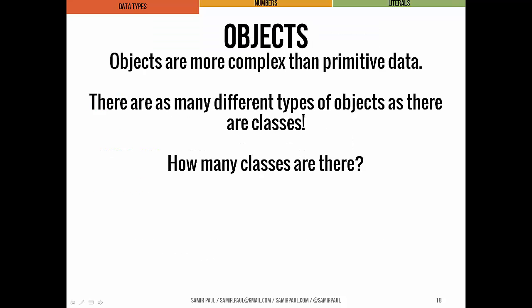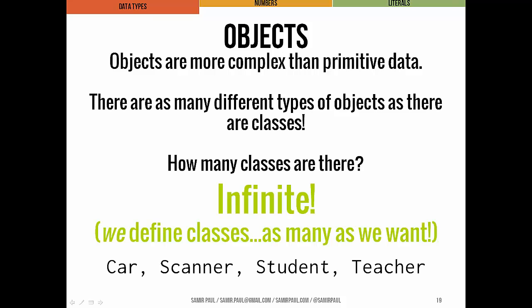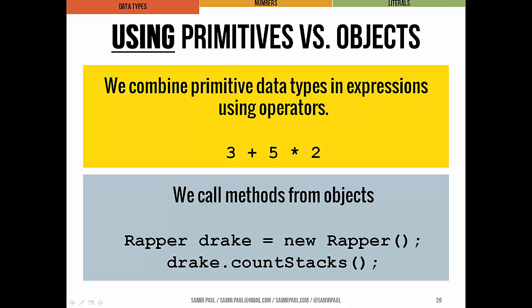Objects are a little more complex. There are as many different types of objects as there are classes defined, and there are infinite classes because we define them — so there's a car, a scanner, a student, a teacher, and we could define a different type of student if we wanted to. We can basically do anything. We've seen some differences already between using primitive data types like integers, doubles, and characters, and objects like scanner, which tend to be a bit more complex.